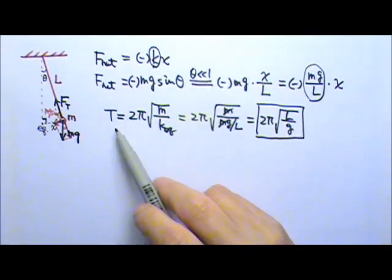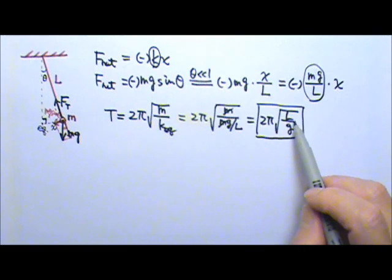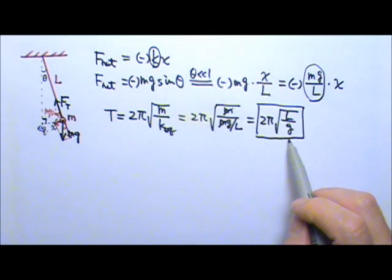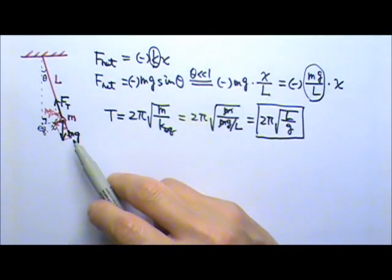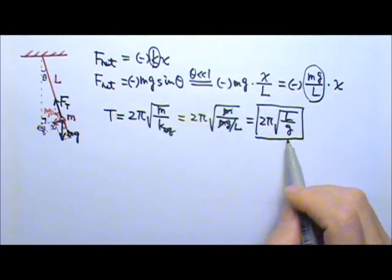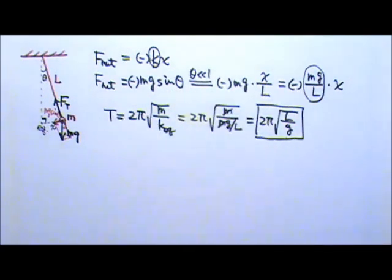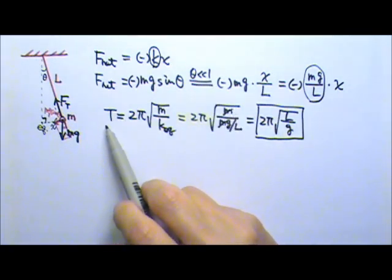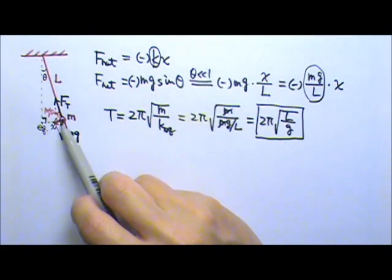The period of a pendulum depends on the length of the pendulum — the longer the pendulum, the longer the period. It also depends on the gravitational acceleration at that particular location: the higher the gravitational acceleration, the shorter the period. And since the mass cancels out, the period of a simple pendulum does not depend on the mass of the pendulum bob. A simple pendulum is a simple harmonic oscillator only if the amplitude is very small; the smaller the amplitude, the more it behaves like a simple harmonic oscillator.